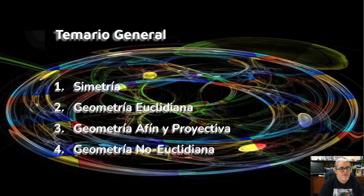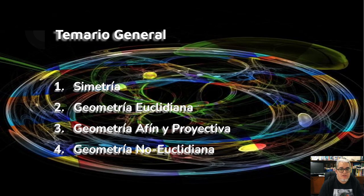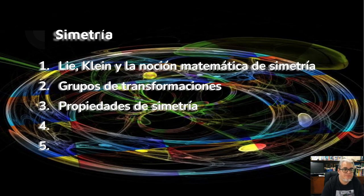De manera general, vamos a empezar viendo algo acerca de la noción matemática de simetría. Vamos a estudiar el grupo de transformaciones rígidas con la geometría euclidiana, los grupos afín y proyectivo con sus invariantes para la parte de geometría afín y proyectiva, y vamos a cerrar con discusiones sobre geometría no euclidiana. En la primera parte vamos a hablar de la historia de la noción matemática de simetría, la noción de grupo, grupos de transformaciones y propiedades de simetría.